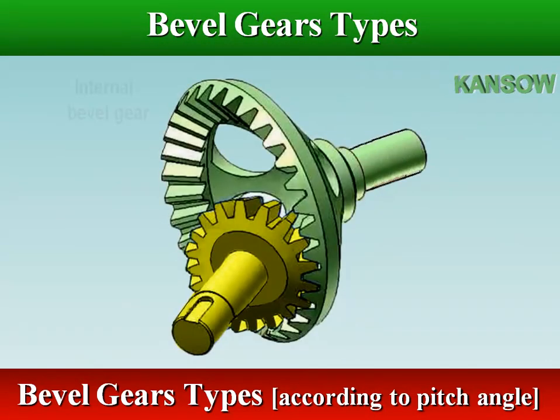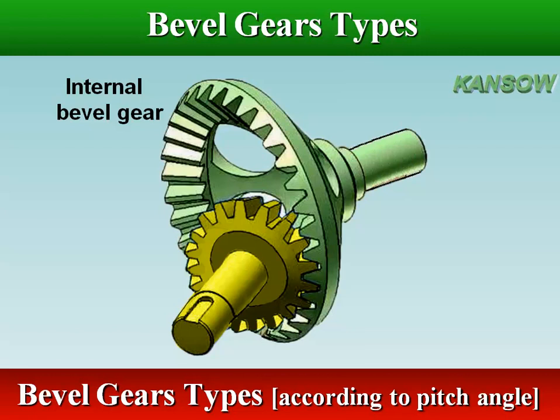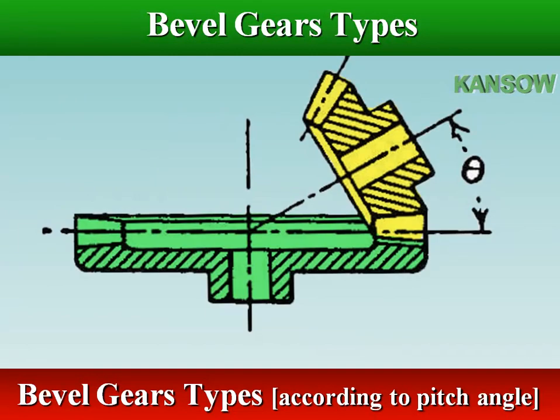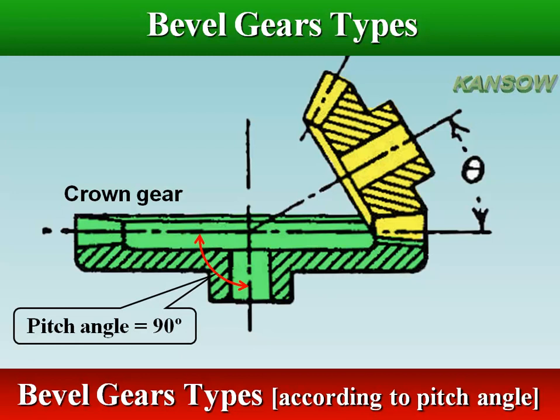The gear manufacturing method is difficult and internal bevel gears are rarely used. The bevel gear having a 90 degree pitch angle and a plane for its pitch surface is called a crown gear.